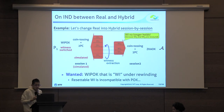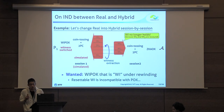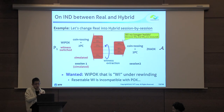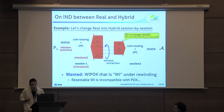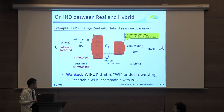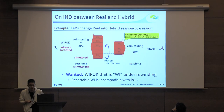You might think that we can use a resettable witness indistinguishable proof here, because it guarantees exactly this kind of witness indistinguishability. However, since we also require a proof-of-knowledge property, we cannot use the resettable WI proof here in a direct way.